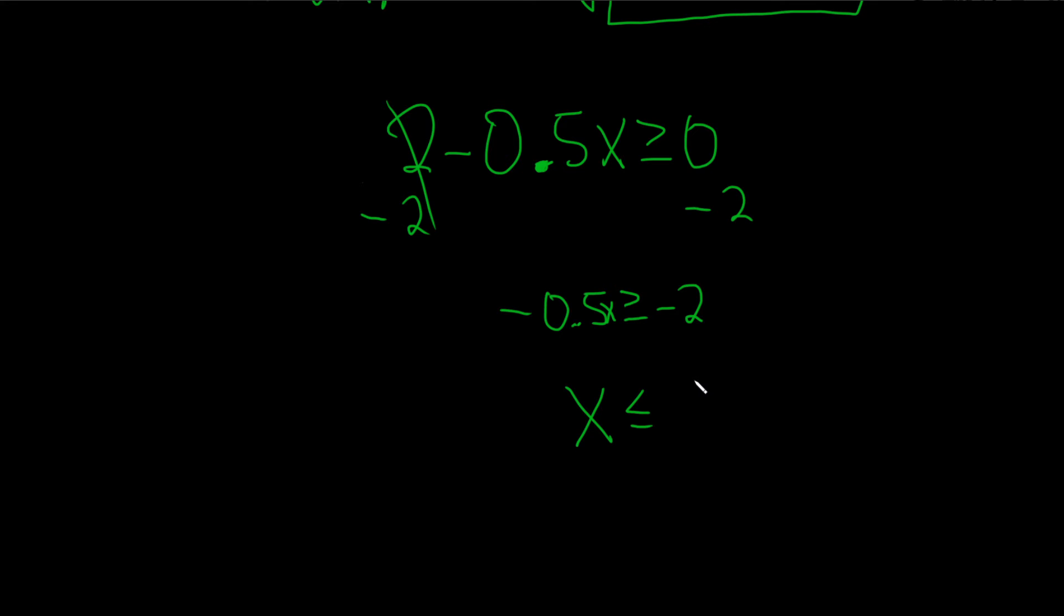So we get -2 over -0.5. This is actually 4, because this is really 2 over 1/2, and then division is multiplication by the reciprocal, so it's 2 times 2 over 1, so it's 4.